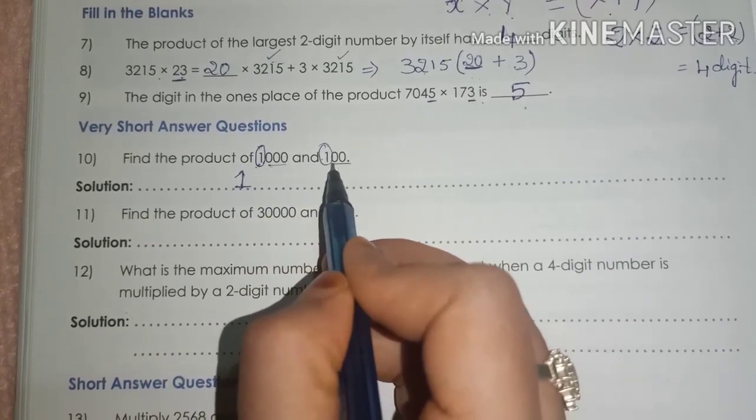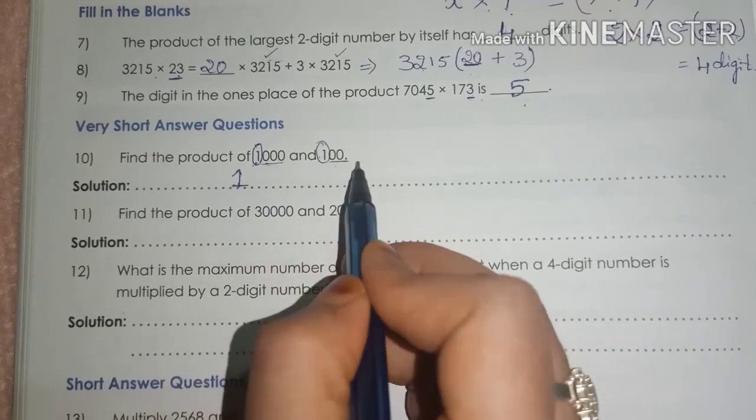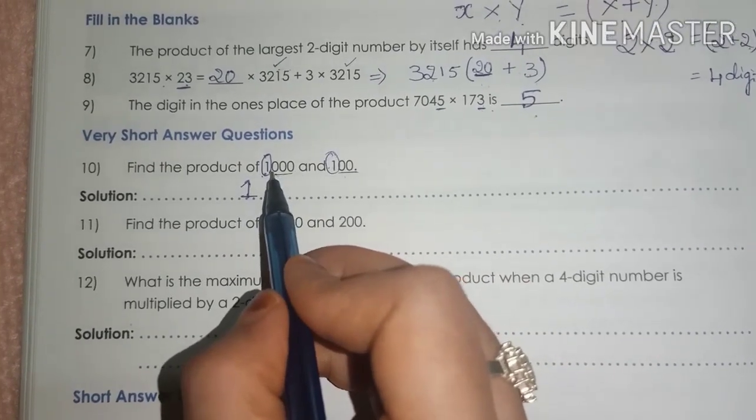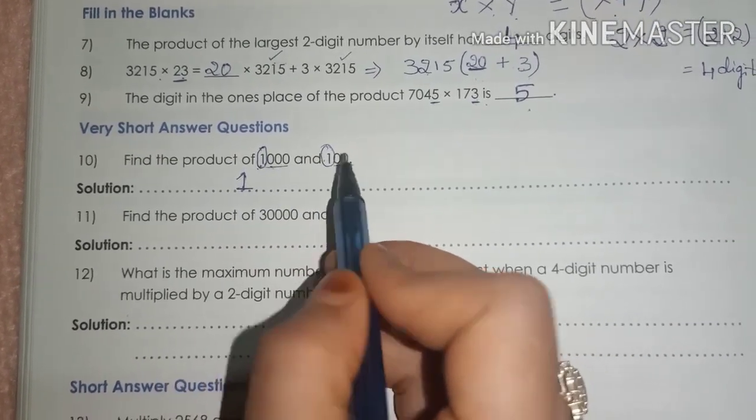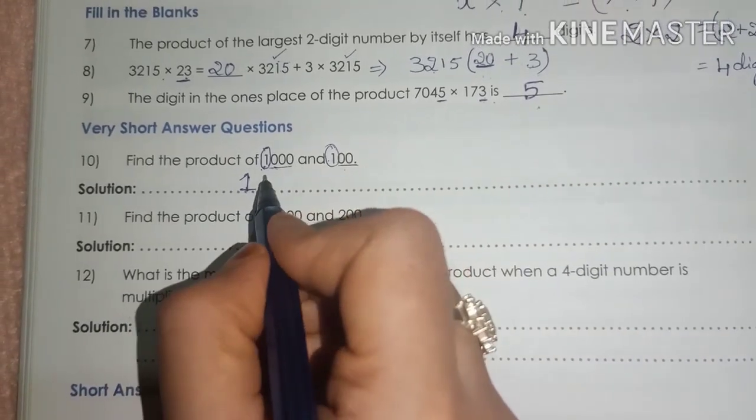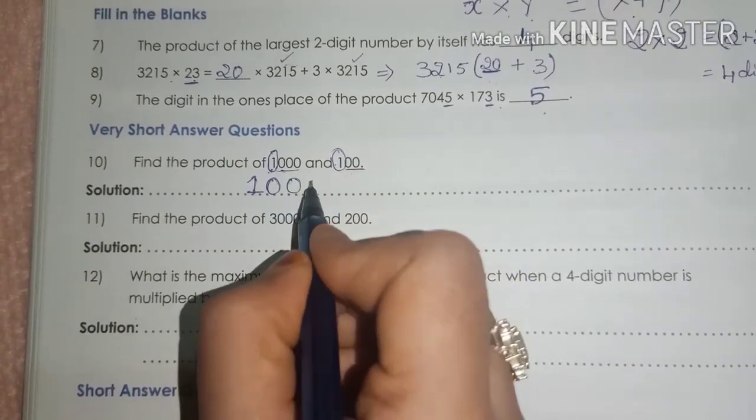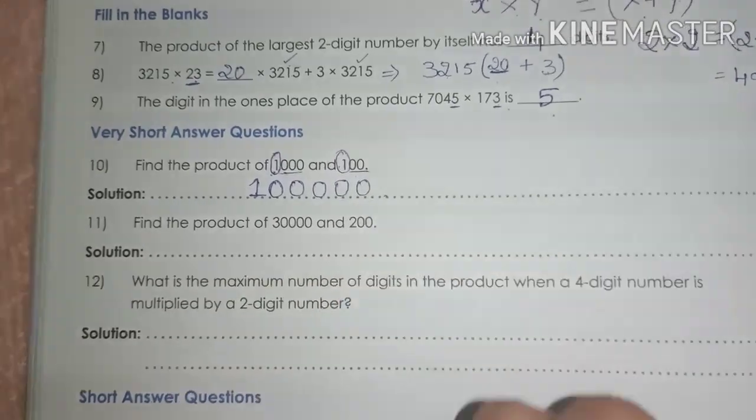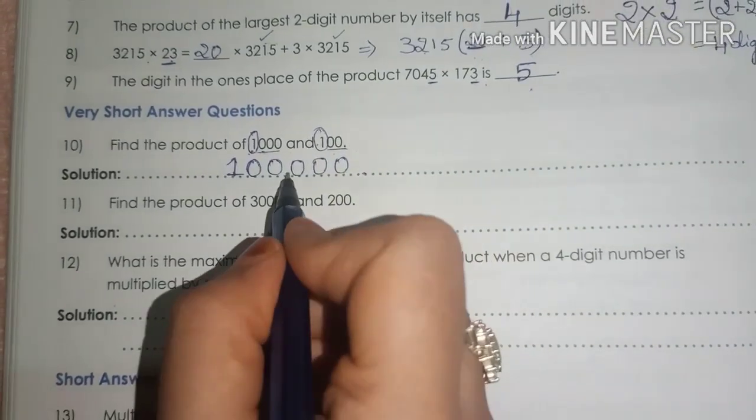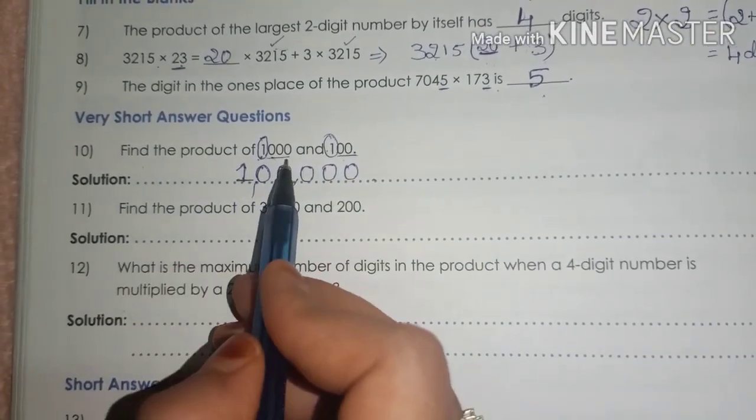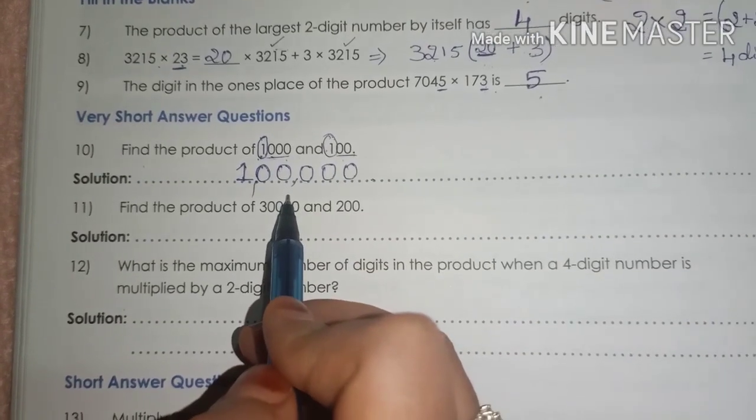Remaining, write down the number of zeros. Total number of zeros in the question. 1, 2, 3, 4, 5. 5 zeros. Write down 5 zeros in the answer. 1, 2, 3, 4, 5. This is your answer. It is 1 lakh. Product of 1000 and 100 is 1 lakh.